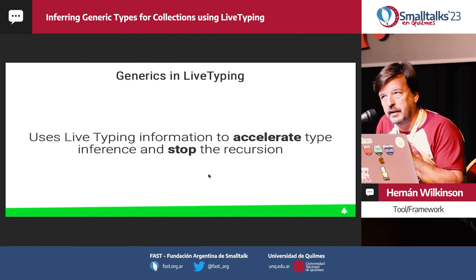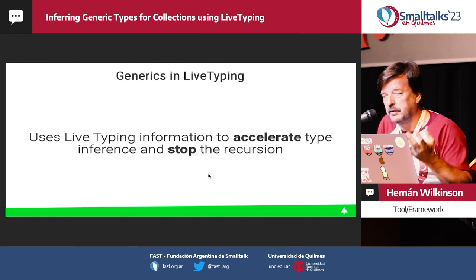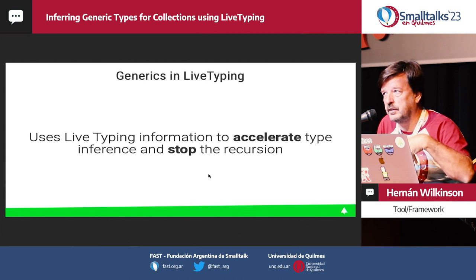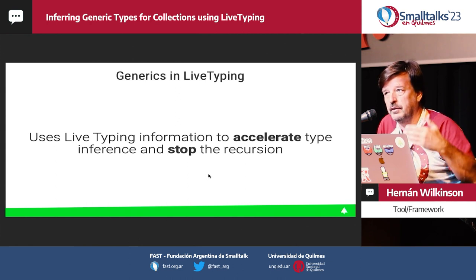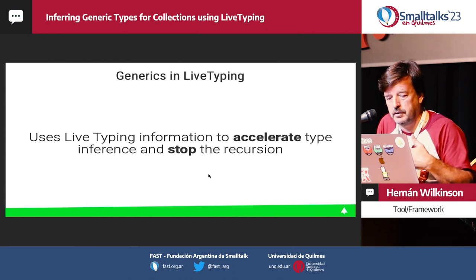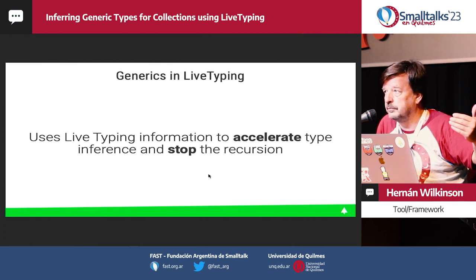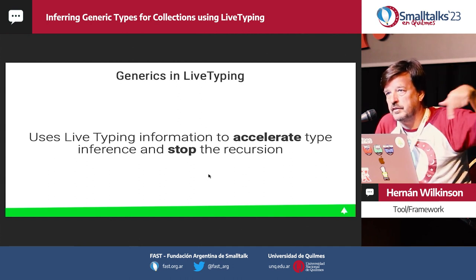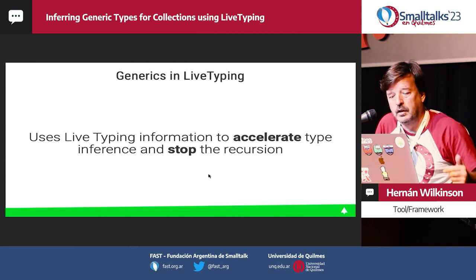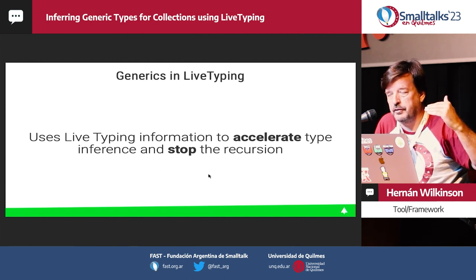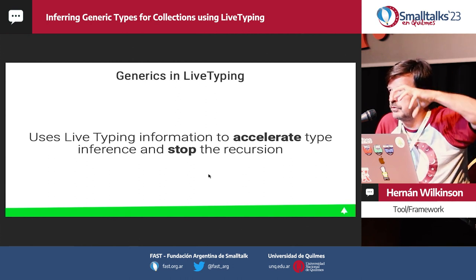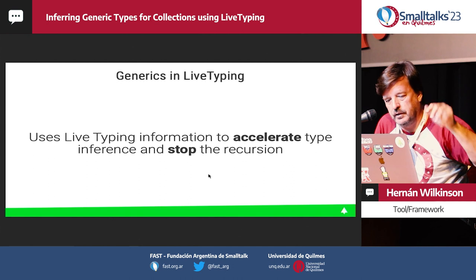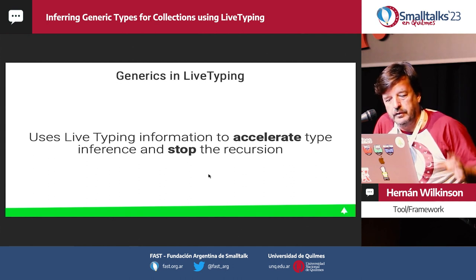So what is 'generic in live typing'? The idea of combining live typing with type inference is to accelerate the type inference algorithm and stop the recursion. The problem with type inference is how deep you go into messages, implementers, and senders. But when you have type information from live typing, you stop earlier — you cut the tree faster.